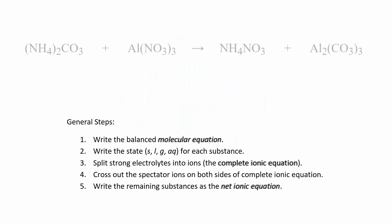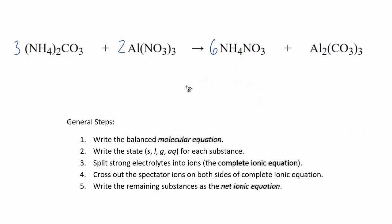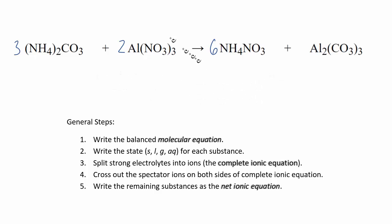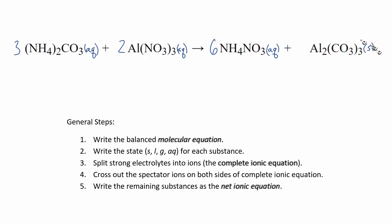Now let's try one with quite a few polyatomic ions. First, balance the equation. Then write the states: the given reactants are assumed aqueous. Ammonium salts are usually soluble, so we write aq. Aluminum carbonate — carbonates are often insoluble, and looking it up confirms it's insoluble, so it's a solid. This means aluminum carbonate will be a precipitate, actually falling to the bottom of the test tube.